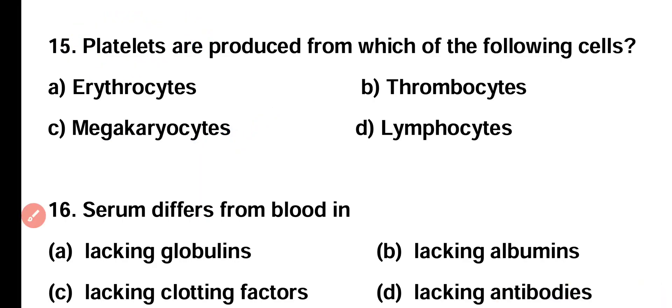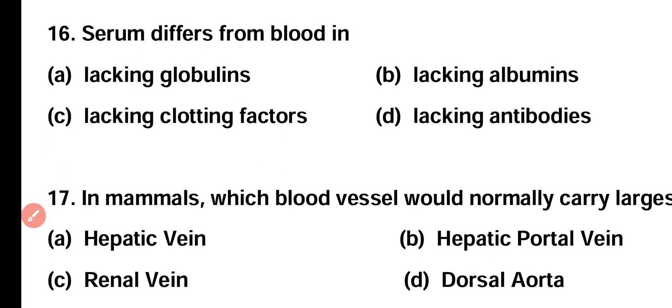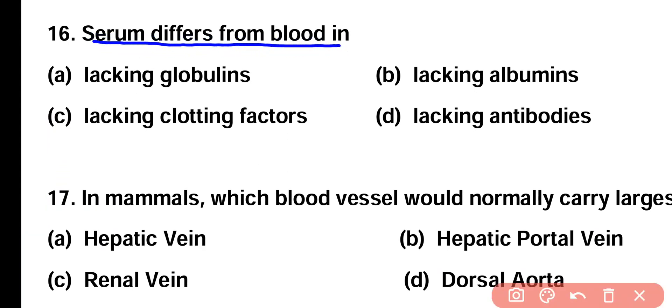Question number 16. Serum differs from blood in: lacking globulin, lacking albumin, lacking clotting factor, or lacking antibodies? Correct answer is option C. Blood clotting factors are present in blood while absent in serum.